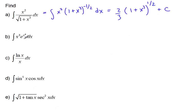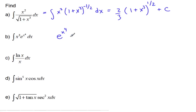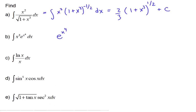The next one: we have e to the x to the fourth. The derivative of e^(x⁴) will be e^(x⁴) times 4x³. Here's my x³, but I don't have a four, so I'm going to counteract this with one-fourth, plus C.